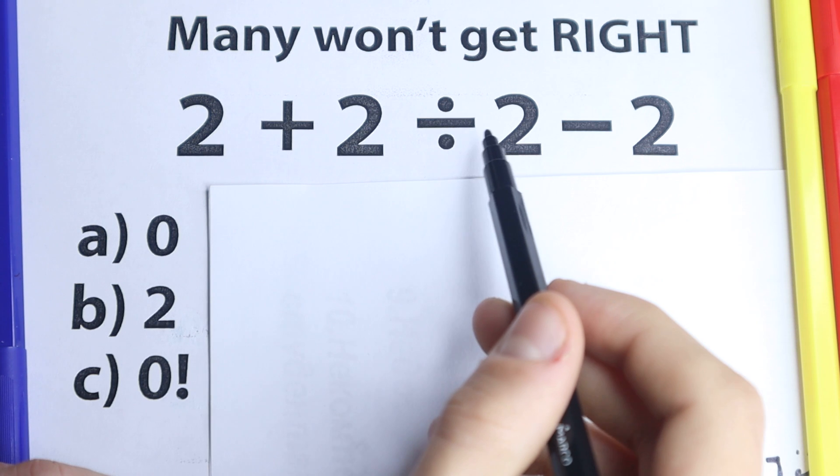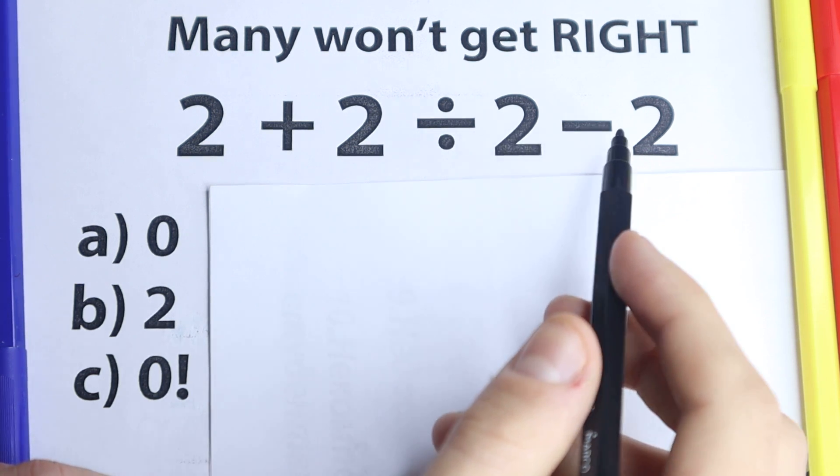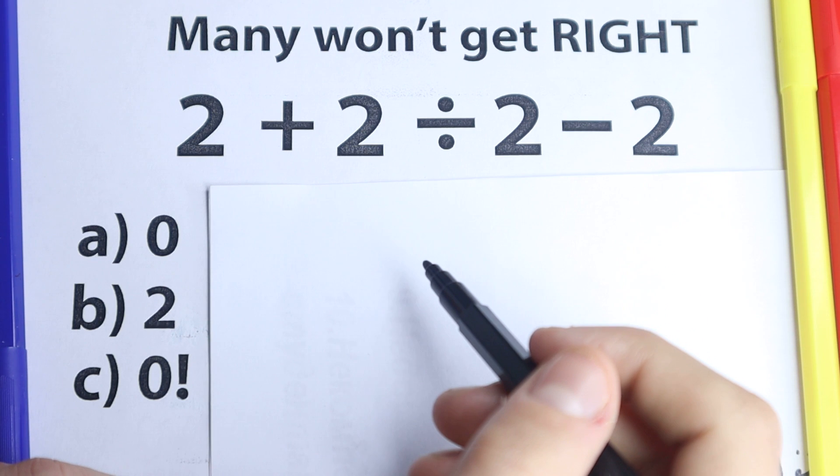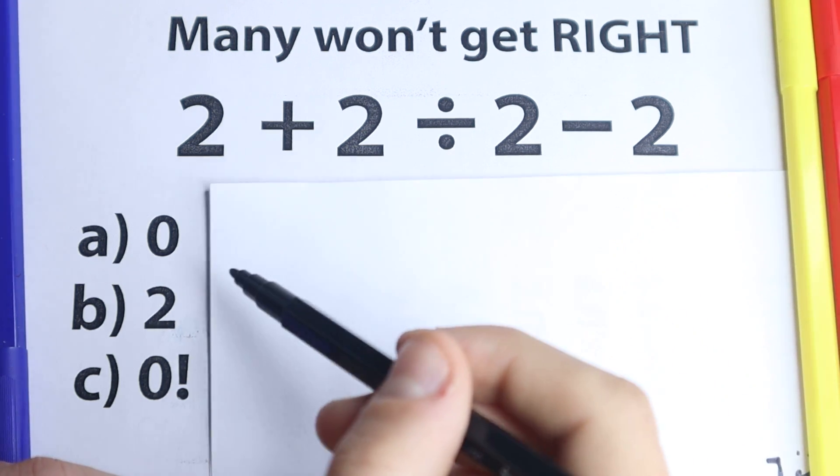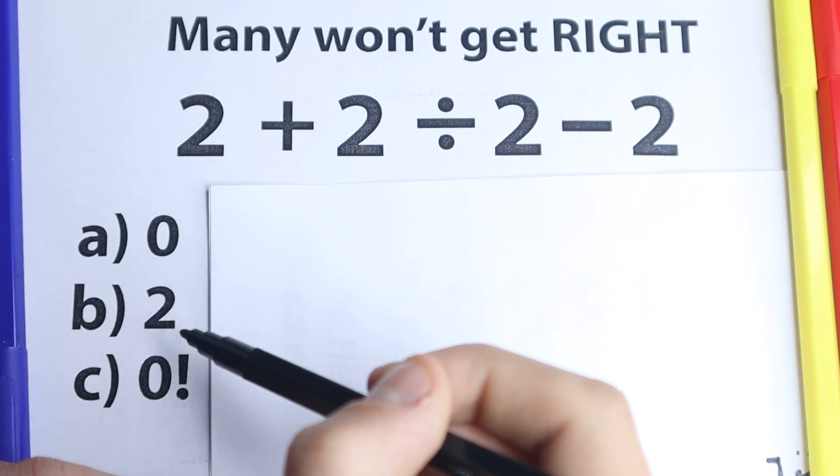We have addition, division, and subtraction. But a lot of students do this common mistake, so I suggest you pause the video and try to solve it by yourself. Right here we have three options, option A, option B, option C.